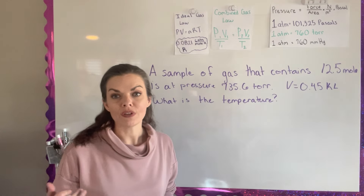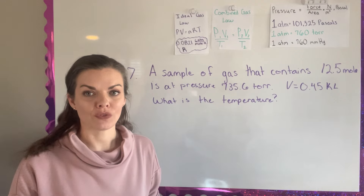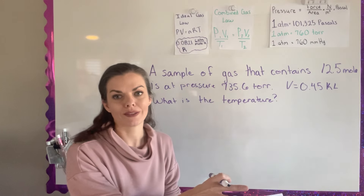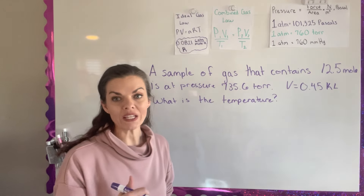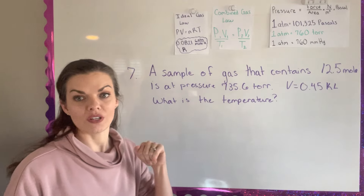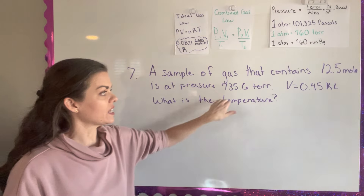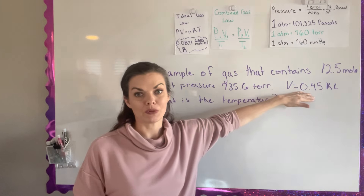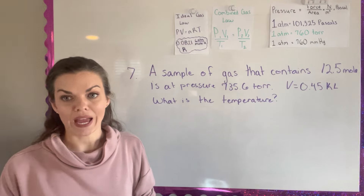Number seven is another ideal gas problem. It is not using STP — they give different information, but I have just one gas, not one gas in two scenarios. They trick you because the given values aren't in the right units, so there's a lot of conversion. The question tells me a sample of gas with 12.5 moles is at a pressure of 735.6 torr, its volume is in kiloliters, and I need to find the temperature.